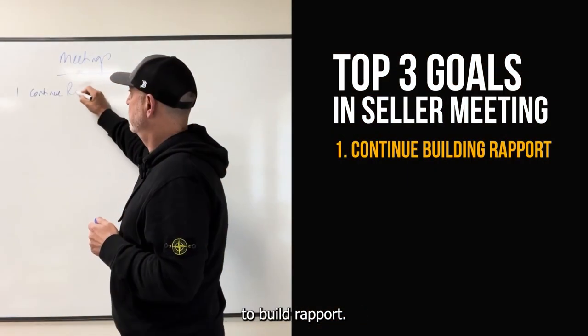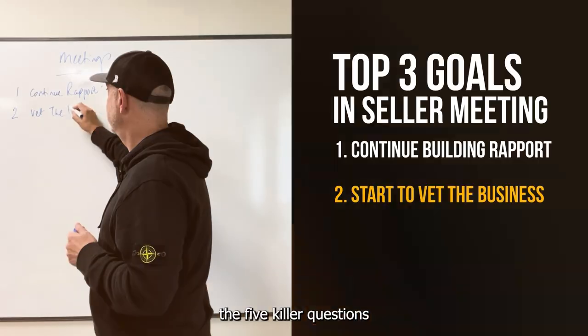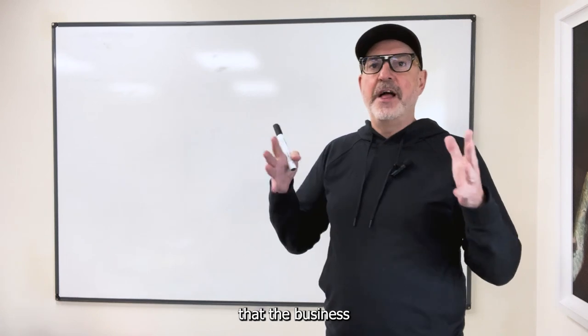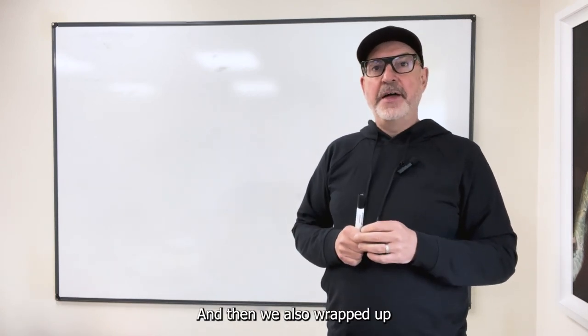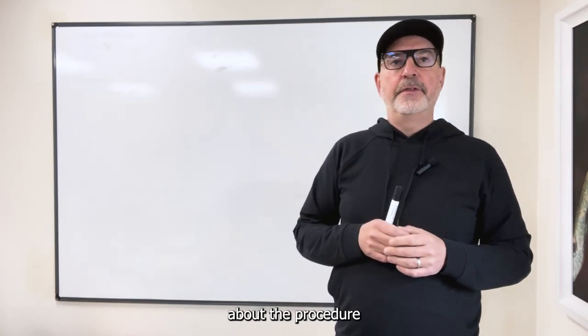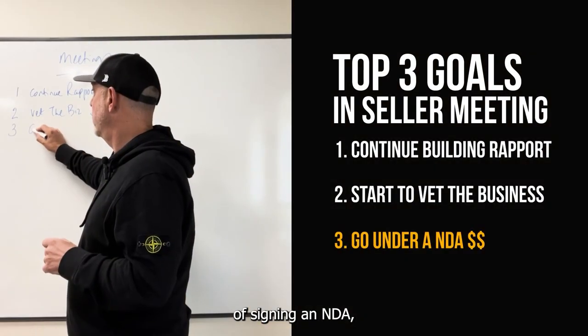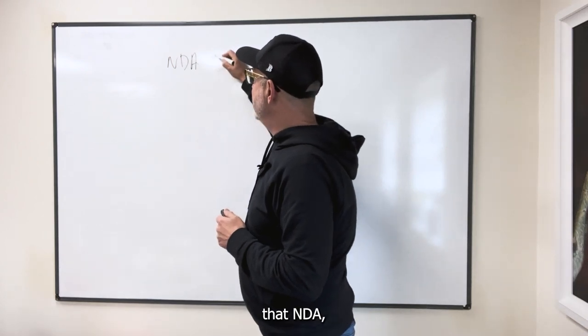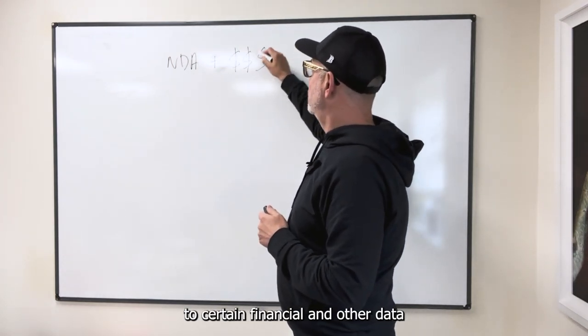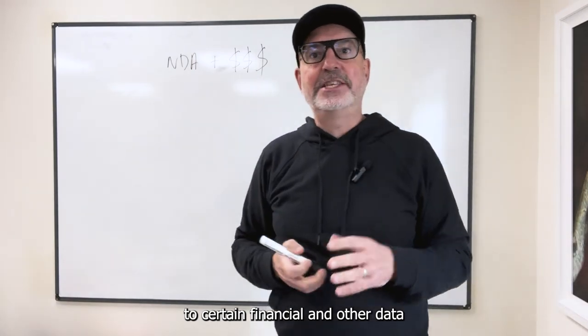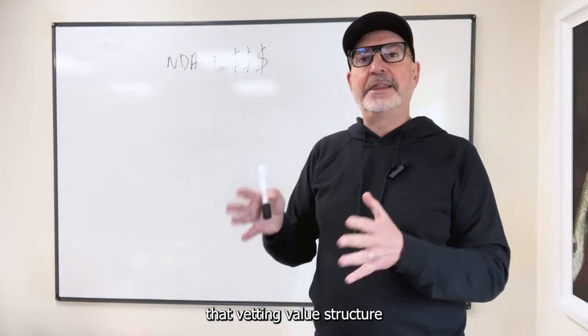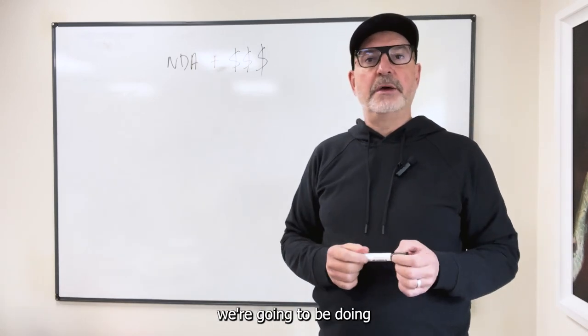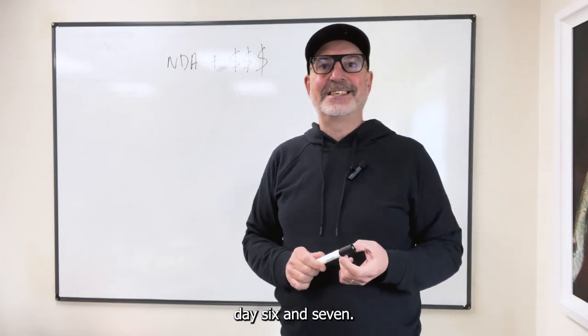We were talking about it being really important to build rapport. We talked about the five killer questions that you need to ask to start to preliminarily vet the business you're looking to buy. And then we also wrapped up by talking about the procedure of signing an NDA, a non-disclosure agreement. And then once you sign that NDA, it's going to give you access to certain financial and other data regarding the business to allow you to complete that vetting, valuation, structure, and then make an offer on that business, which is what we're going to be doing day six and seven.